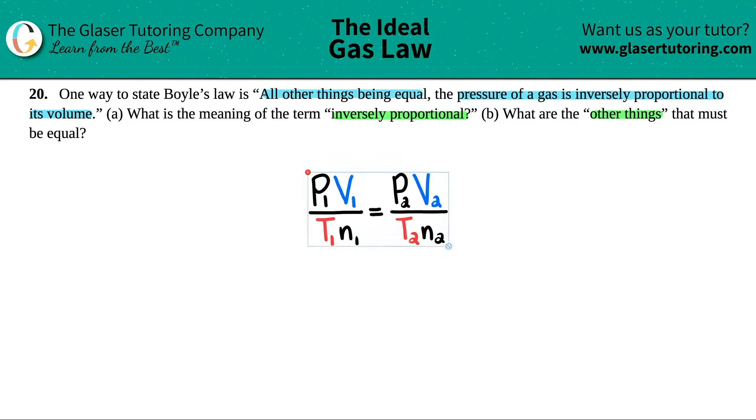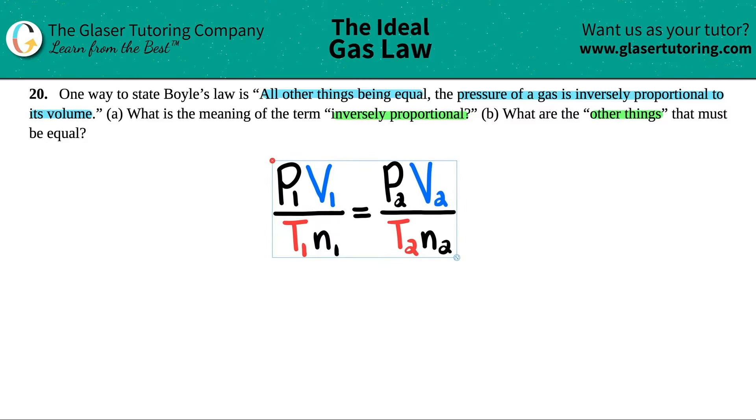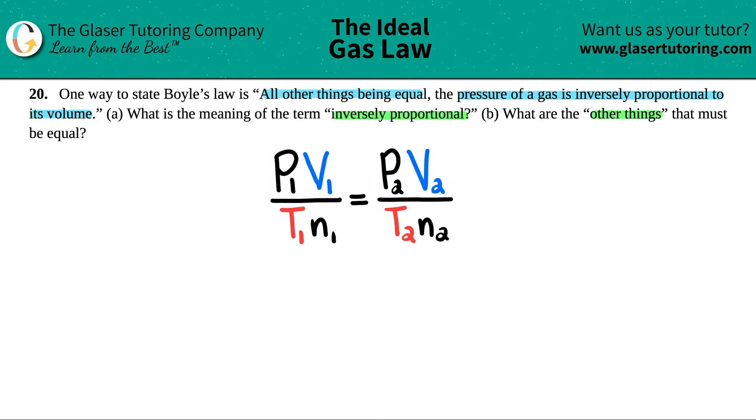It's this formula right here. This is the combined gas law that combines four laws together, and all four laws were named after the scientists that invented them. So Boyle specifically talked about the relationship between pressure and volume.